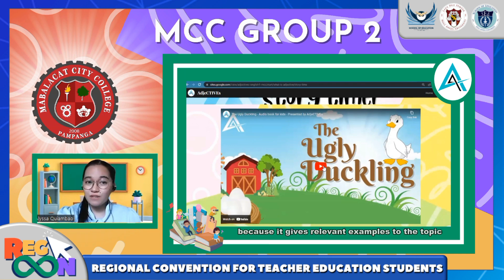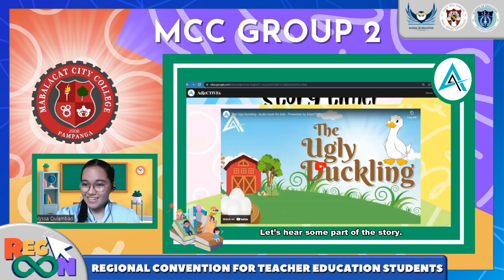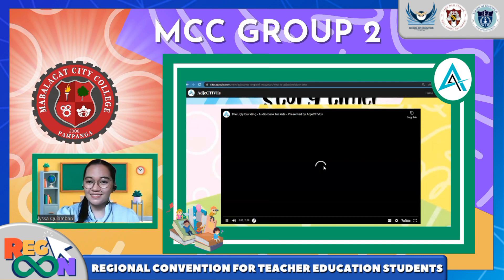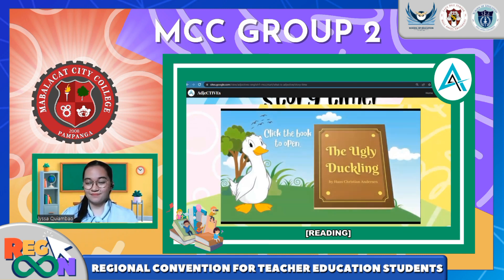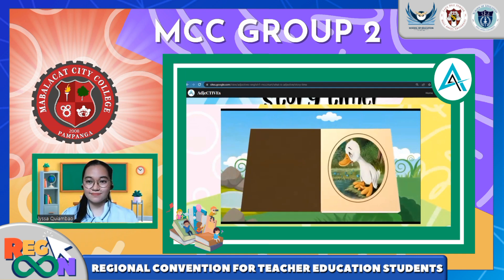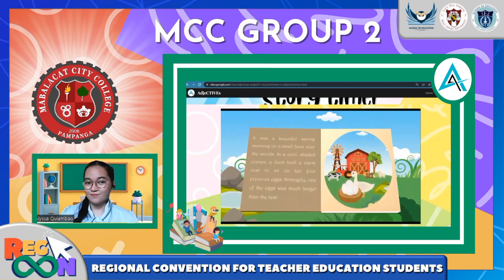Next we have the story slash audiobook. This is the story of The Ugly Duckling, chosen because it gives relevant examples to the topic of adjectives. Let's hear some part of the story: 'The Ugly Duckling by Hans Christian Andersen. It was a beautiful spring morning on a small farm near the woods. In a cool shaded corner, a duck built a warm nest to sit on her four precious eggs. Strangely, one of the eggs was much larger than the rest.'